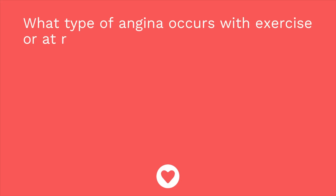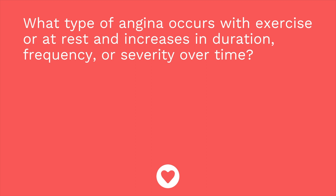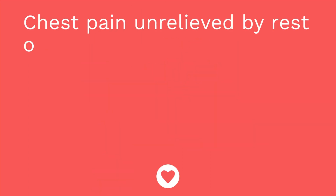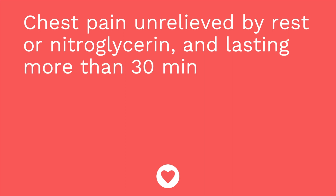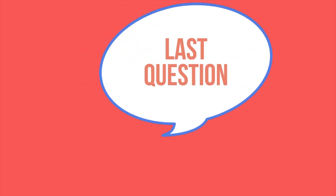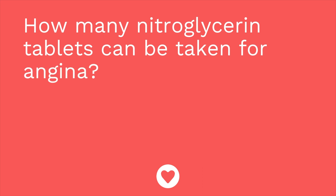It's quiz time. I have three questions for you. Question one: What type of angina occurs with exercise or at rest and increases in duration, frequency, or severity over time? The answer is unstable angina. Question two: Chest pain unrelieved by rest or nitroglycerin and lasting more than 30 minutes is indicative of what? The answer is a myocardial infarction. Question three: How many nitroglycerin tablets can be taken for angina? The answer is up to three.